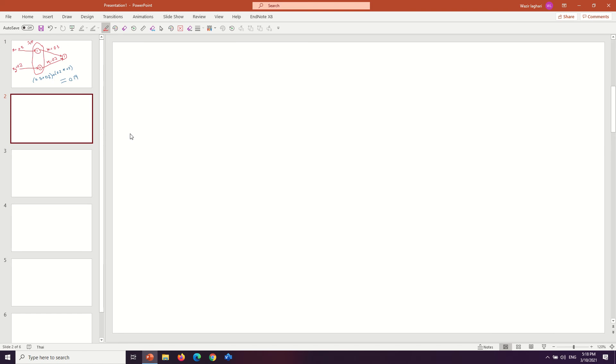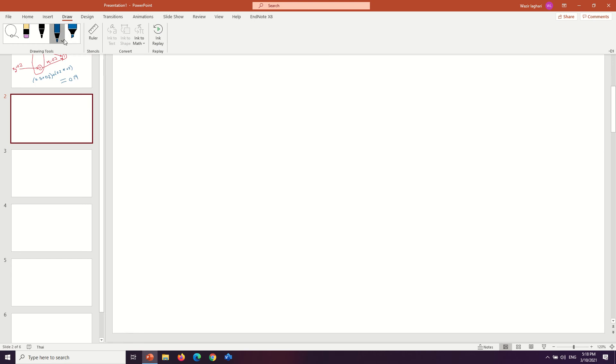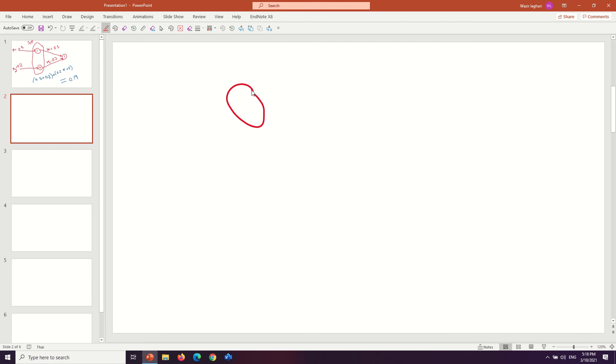two inputs as well as two outputs, then in such scenario we solve the network like this way. Suppose this is input one and this is input two, and here is the first output and the second output. Here x1 is equal to 0.5 and similarly x2 is equal to 0.3.